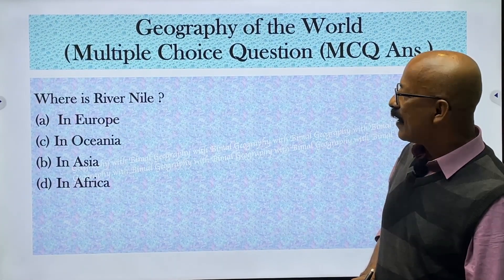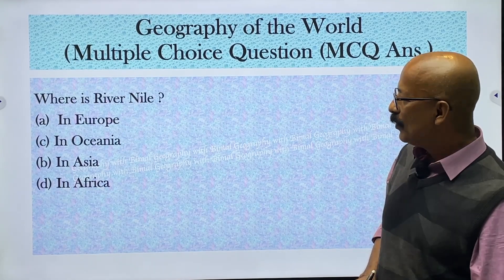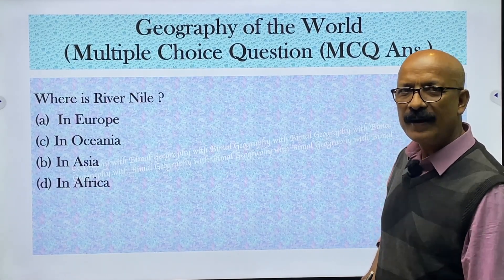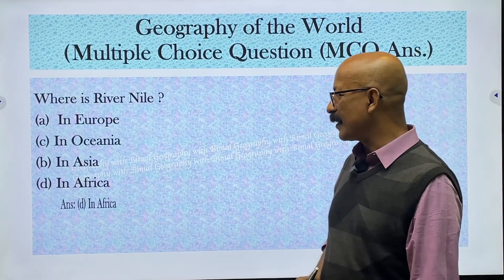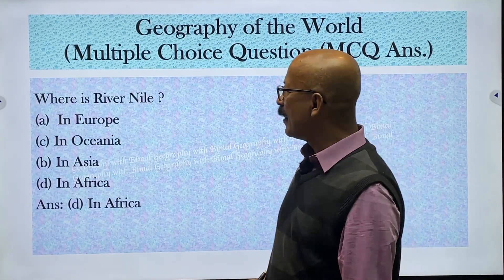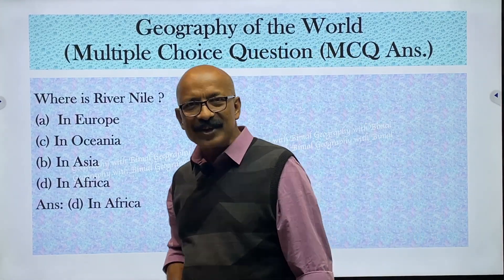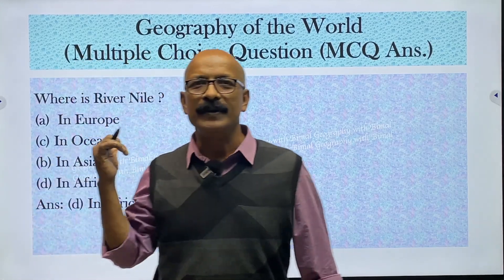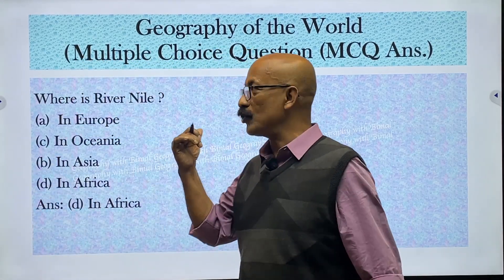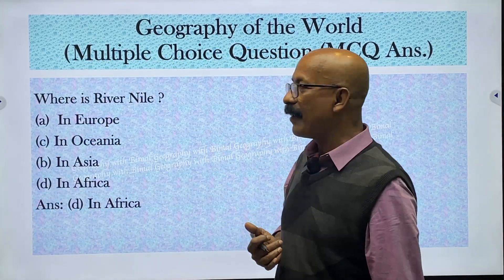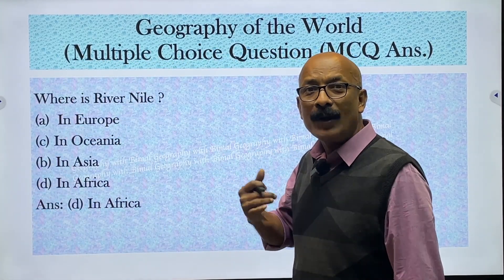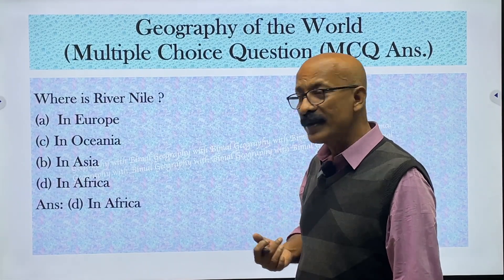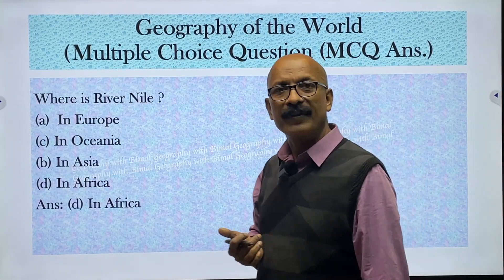Where is the River Nile? Options are Europe, Oceania, Asia, and Africa. The correct answer is Africa. River Nile is the longest river in the world and it is in Africa. So a related question could be: name the longest river in the world — it is the Nile, from Africa.